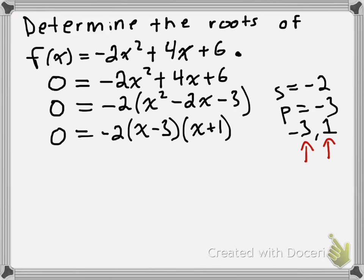...is take a look at this expression now that it's been factored. Notice that we have 0 = -2(x - 3)(x + 1). Since these three are being multiplied by one another and we end up with an answer of 0, at least one of those three factors has to be equal to 0.